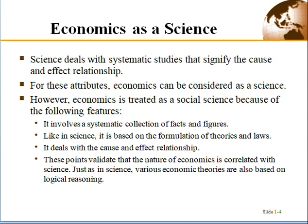Economics is treated as a social science given the following features: first, it involves systematic collection of facts and figures, which is what science does. Second, it is based on the formulation of theories and laws — in economics we have theories and laws that have improved over time. Third, it deals with the cause-and-effect relationship, which validates the nature of economics as a science.